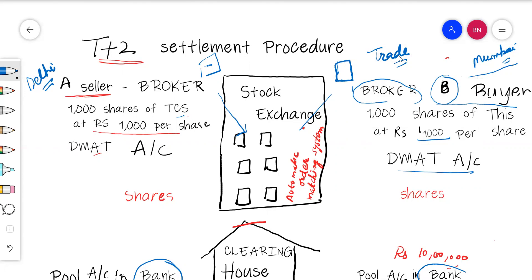The stock exchange sends a message to the seller's broker that you have a trade, and the same message is sent to the buyer's broker. Both the seller's broker and the buyer's broker then issue a trade confirmation slip to their respective clients.